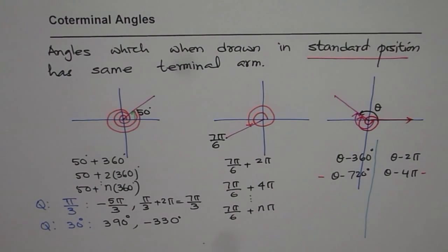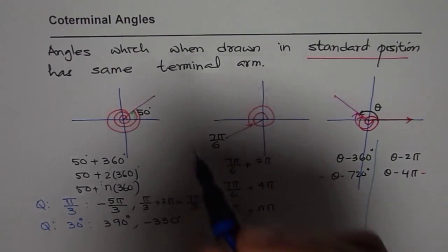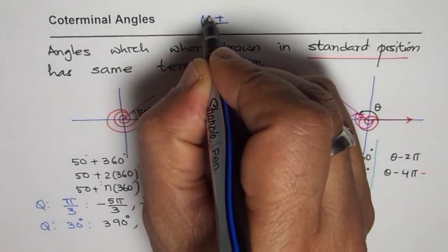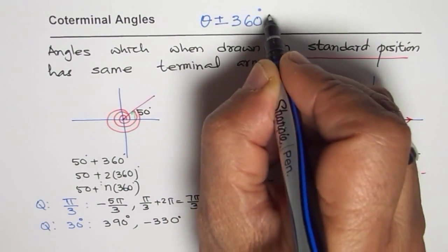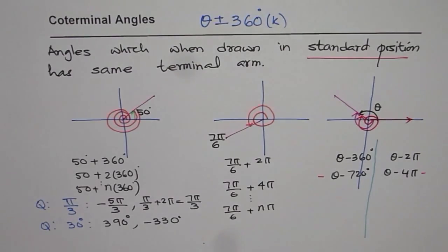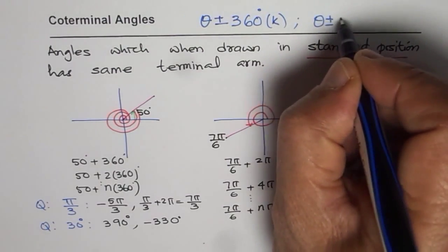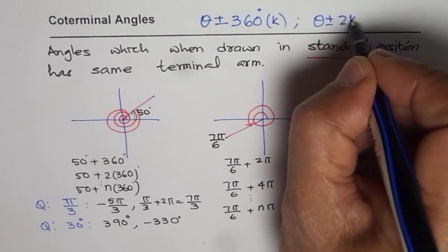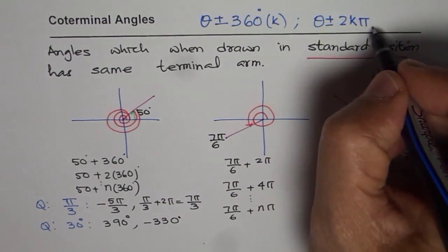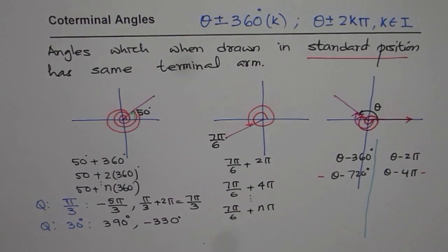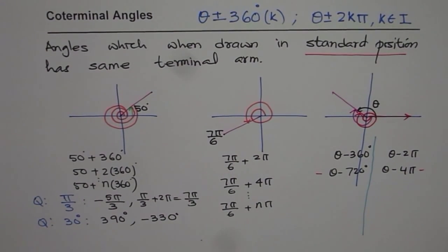In general, to find co-terminal angles, add or subtract multiples of one full circle. In degrees: theta plus or minus 360k, where k is an integer. In radians: theta plus or minus 2kπ, where k is an integer. One full circle is 360 degrees or 2π radians. Adding or subtracting any multiple of that gives a co-terminal angle. Thank you and all the best.